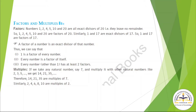Now, Multiples: if we take any natural number, say 7, and multiply it with other natural numbers like 2, 3, 5, we get 14, 21, 35. So 14, 21, 35 are multiples of 7. These are the multiples.